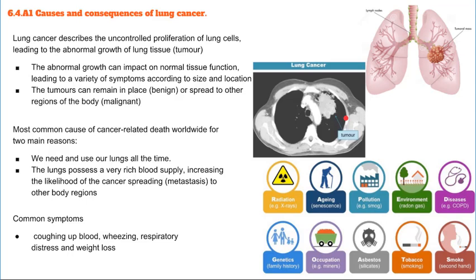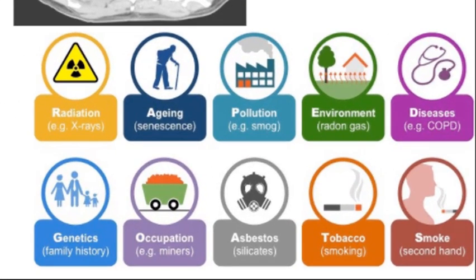The causes of lung cancer include smoking — probably the biggest and most well-known cause — as well as air pollution, including substances like asbestos, which is a dust that coats the lungs and impairs alveoli function. Other causes include infections or genetic predispositions. Symptoms of lung cancer include coughing up blood, wheezing, respiratory distress, and weight loss.